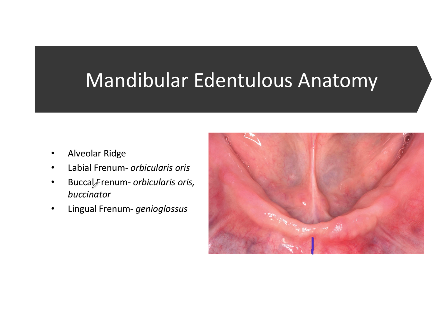We again have the buccal frenum — one on the patient's right side and one on the left, associated with the cheeks. They have muscles that attach into them: the orbicularis oris muscle and the buccinator muscle. This is actually true for the maxillary buccal frenum as well, so they have the same muscle attachments for upper and lower — pretty nice and symmetrical.